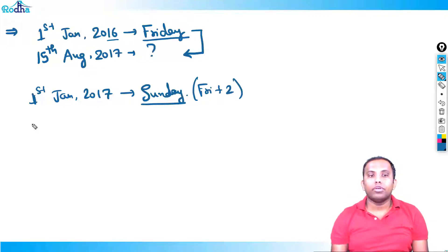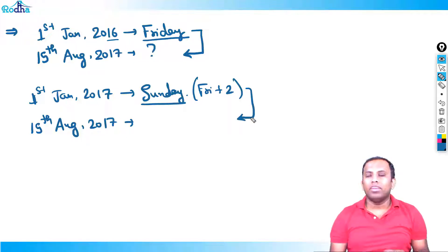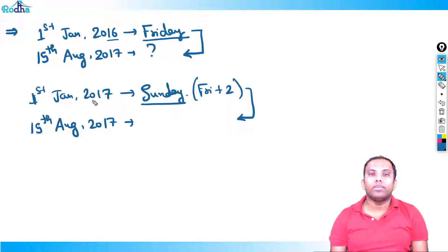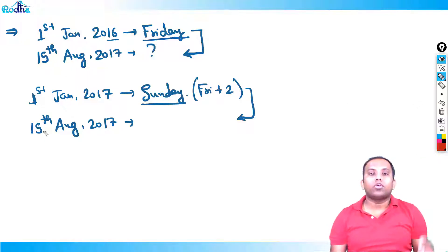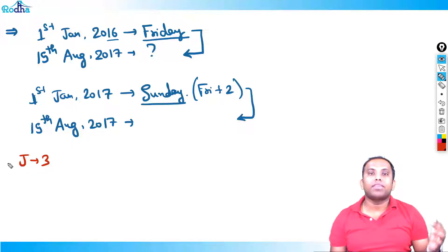Now we are calculating from 1st January 2017 to 15th August 2017. We can calculate this on fingers. January is a month of 31 days, 31 divided by 7 remainder is 3 — three odd days. February: 2017 is a non-leap year, so February has 28 days — 28 by 7, remainder is 0 — wait, 29 days gives remainder 1, so one odd day.